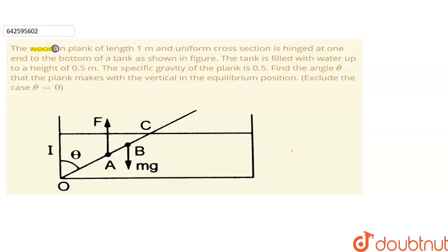In this question, a wooden plank of length 1 meter and uniform cross section is hinged at one end to the bottom of a tank as shown in the figure. The tank is filled with water up to a height of 0.5 meter. The specific gravity of the plank is 0.5. We have to find out the angle theta that the plank makes with the vertical in equilibrium position.